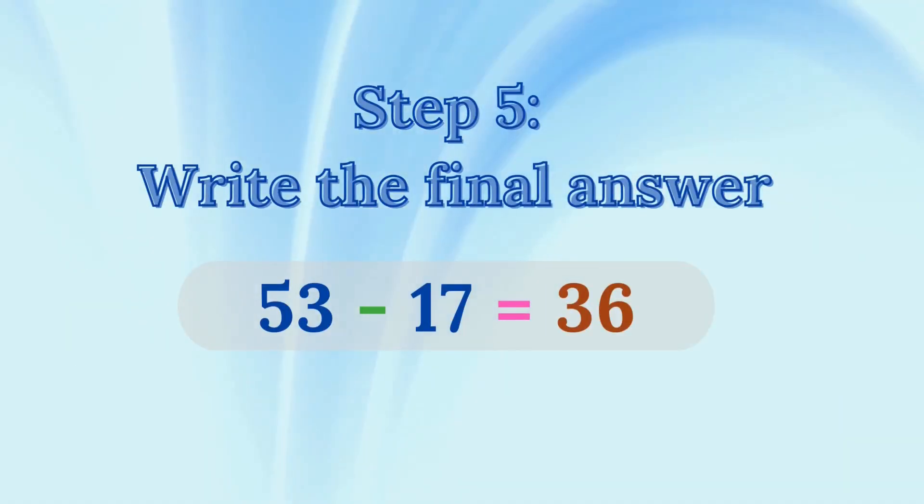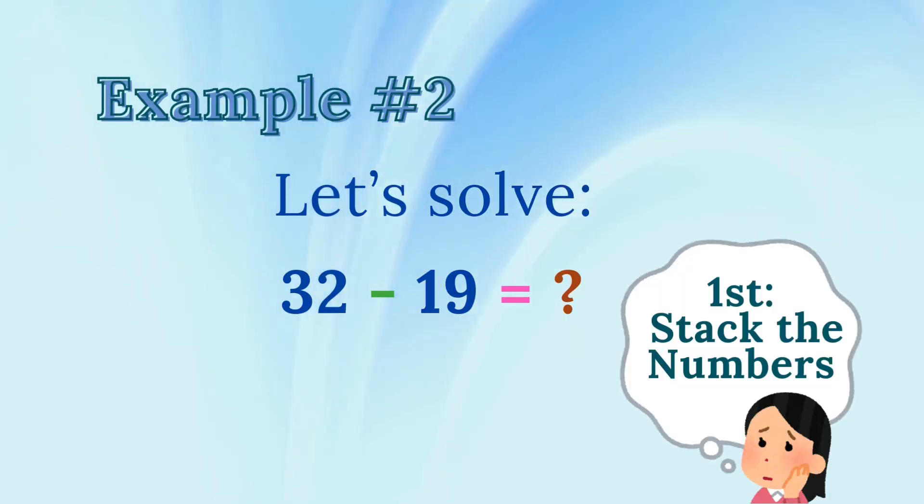Step 5. Write the final answer. 53 minus 17 equals 36. Example number 2. Let's solve 32 minus 19.